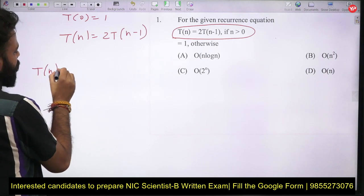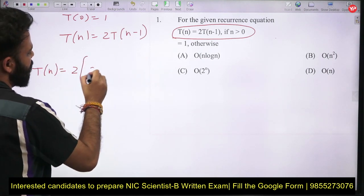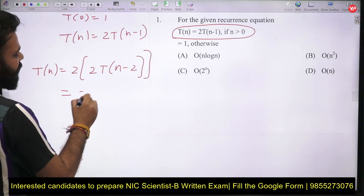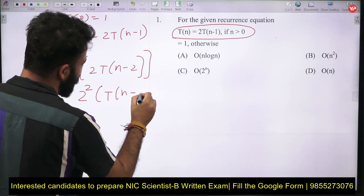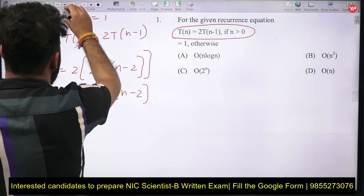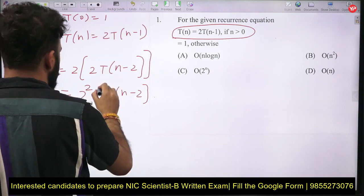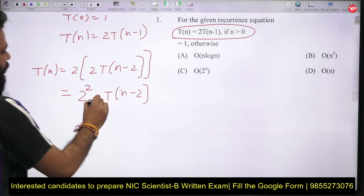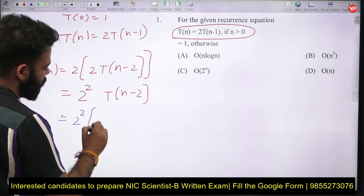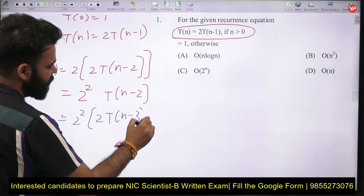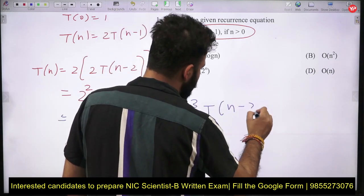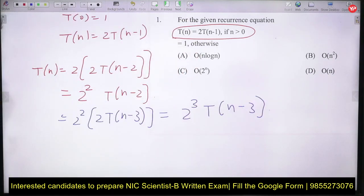Using the substitution method, T(n) = 2T(n-1). Substituting T(n-1) = 2T(n-2), we get T(n) = 2 × 2T(n-2) = 2² T(n-2). Substituting again gives T(n) = 2³ T(n-3).